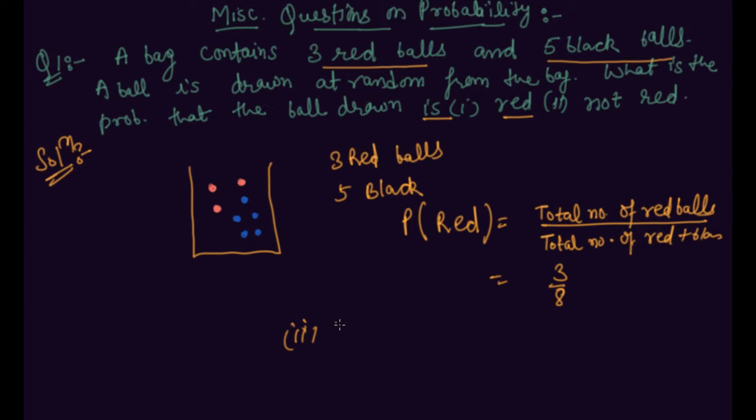And what is the second part? Probability of not red means all the black balls.